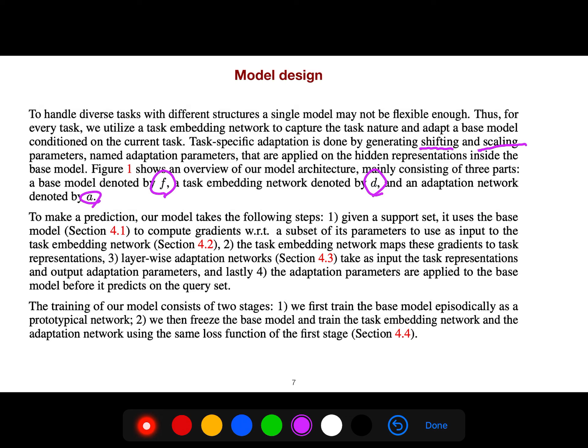To make a prediction, our model takes the following steps. Given a support set, it uses the base model to compute gradients with respect to a subset of its parameters to use as input to the task embedding network. The task embedding network maps these gradients to task representations. Then the layer-wise adaptation network takes as input the task representation and outputs adaptation parameters. Finally, the adaptation parameters are applied to the base model before it predicts on the query set.